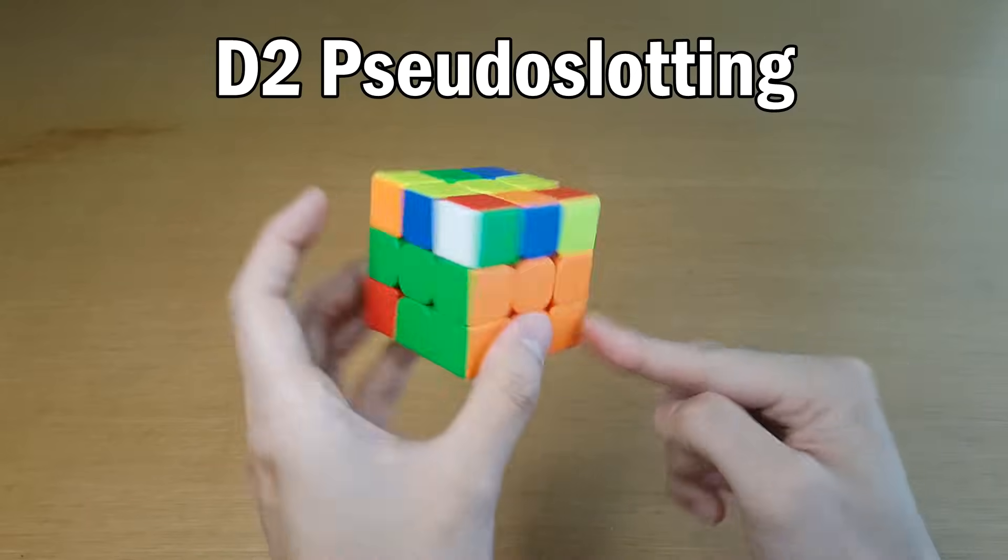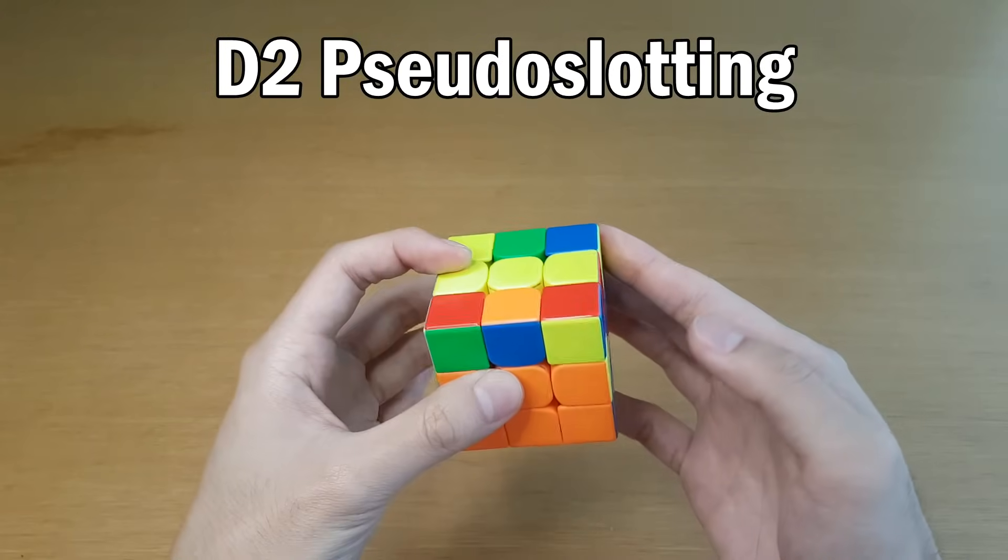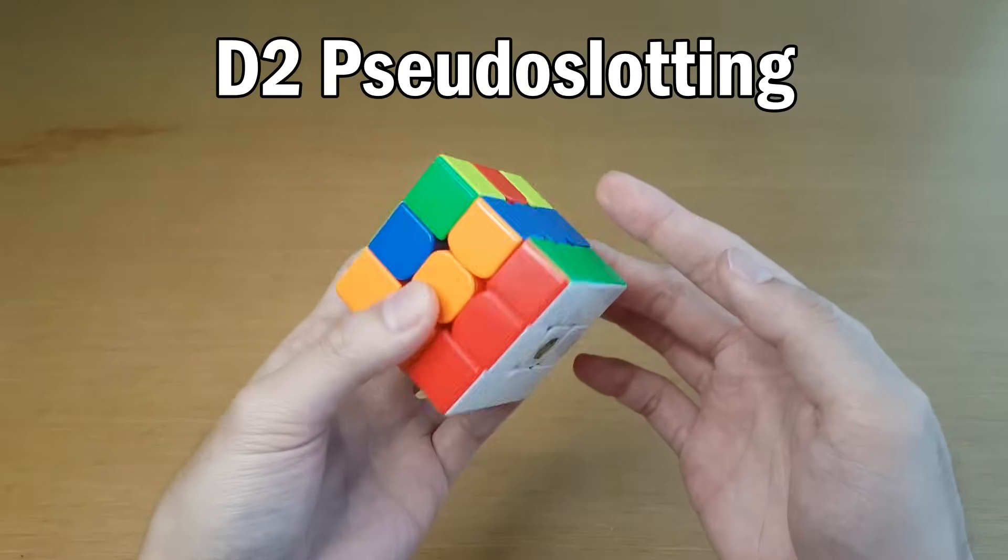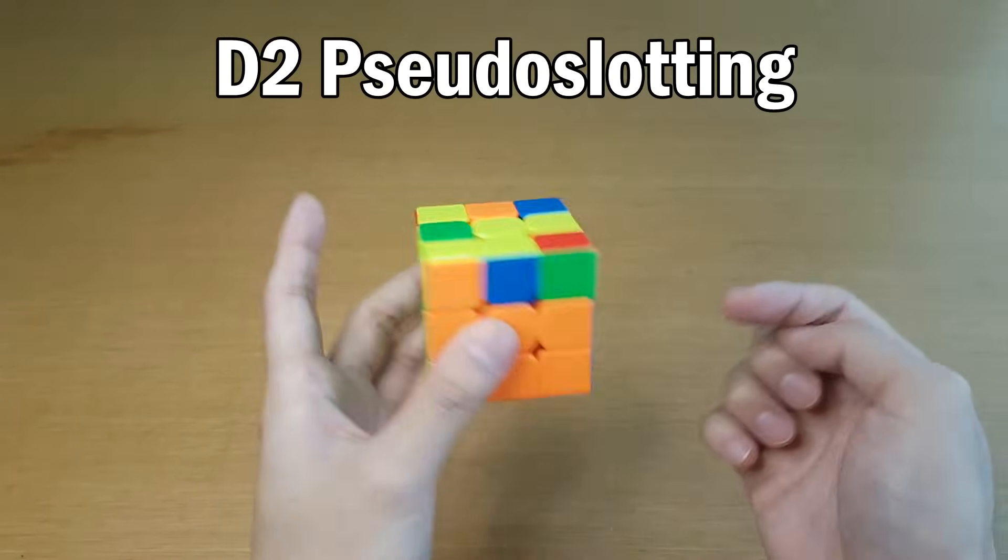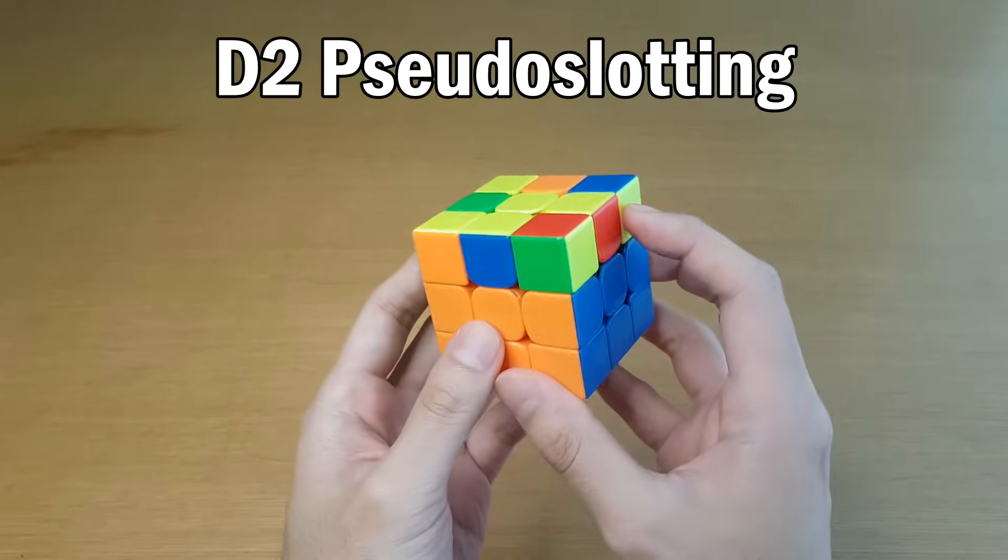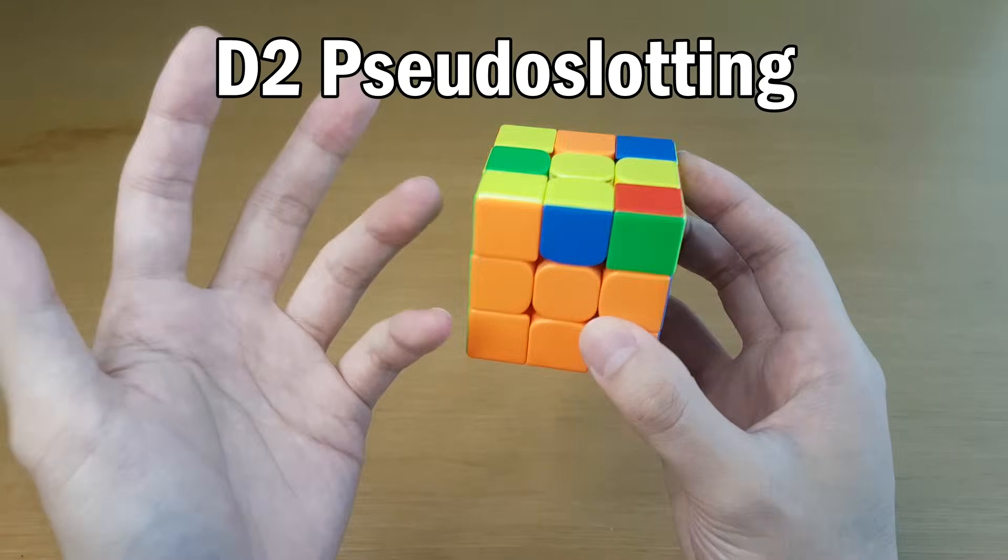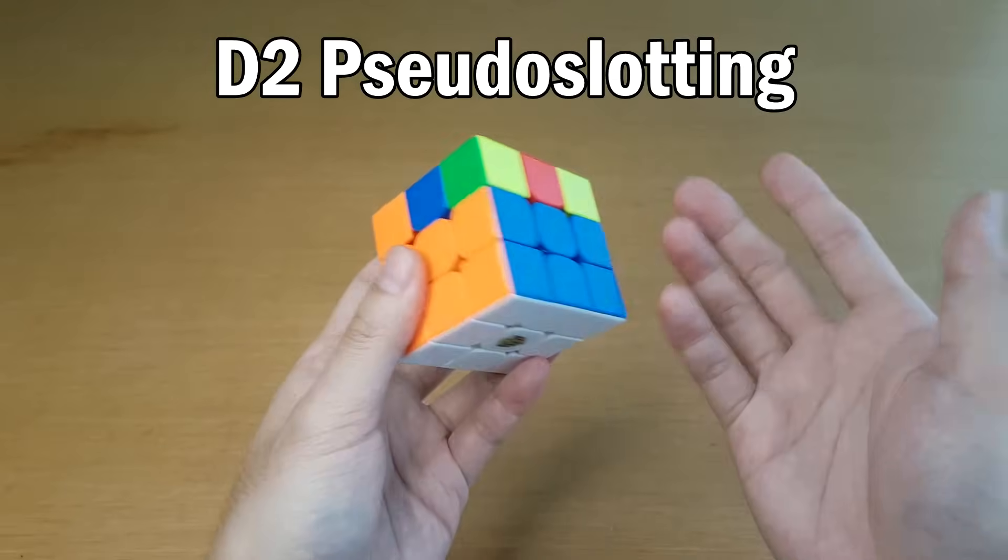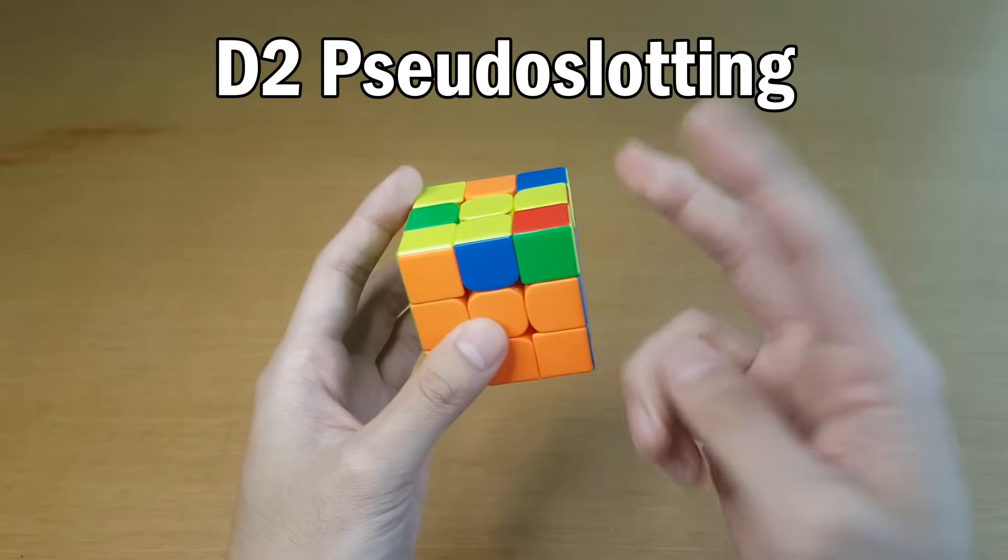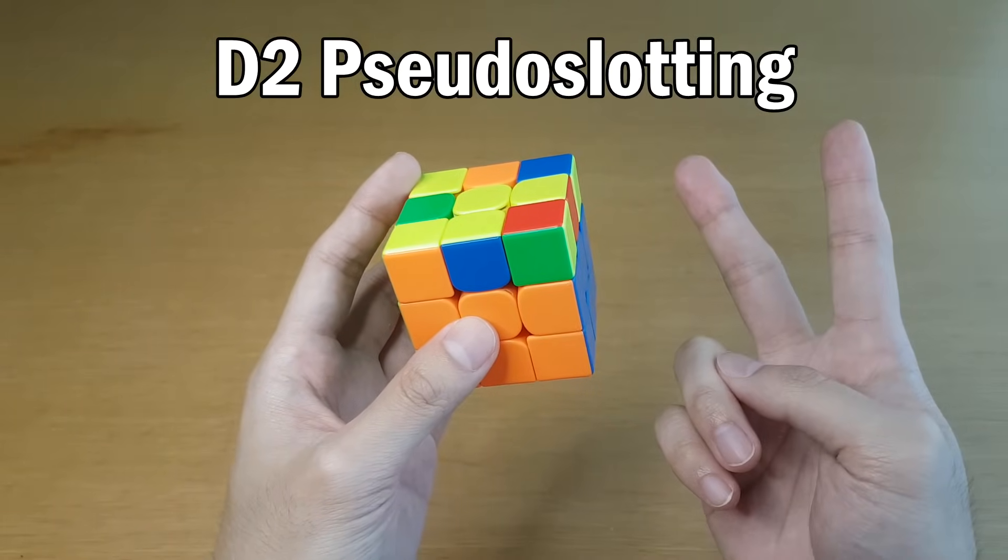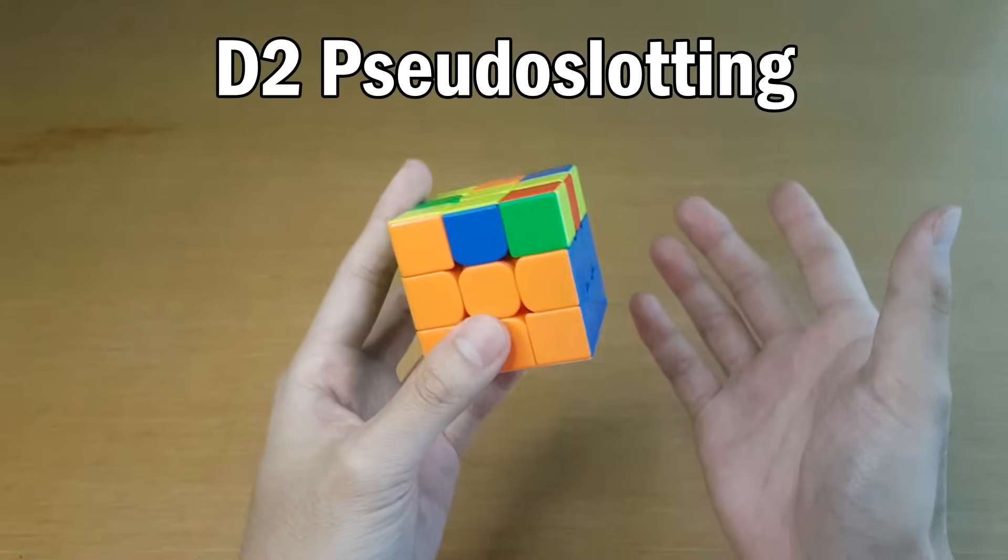Also, is it worth it to do a pseudoslot from a D2 away? Well, obviously, if it's like a three-move case, of course, that is the best solution for that case. But if it's a longer case or if the recognition is difficult and you have to look back and forth between them, then again, it's not always worth it. Also, for the simple reason that D2 is longer than D or D prime which means you're doing two extra quarter turns to do the pseudoslot. And you cannot do the technique, which I'm talking about next.